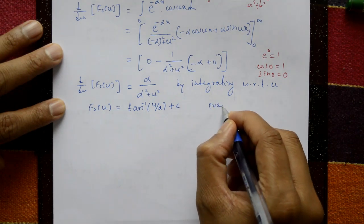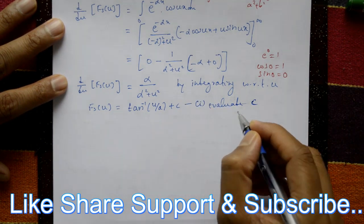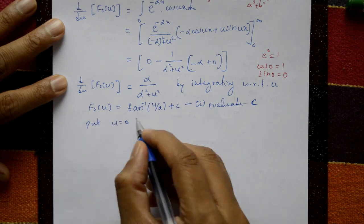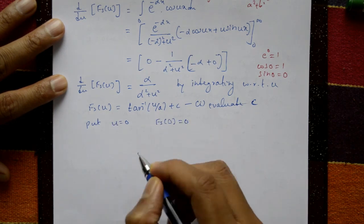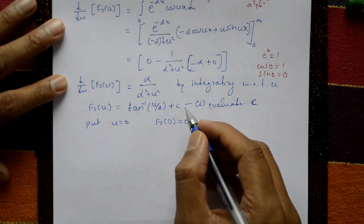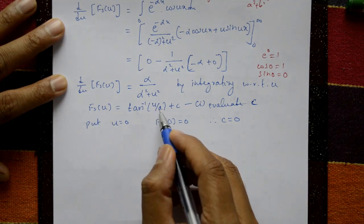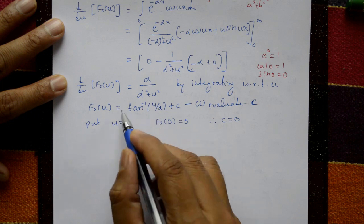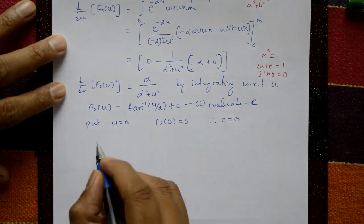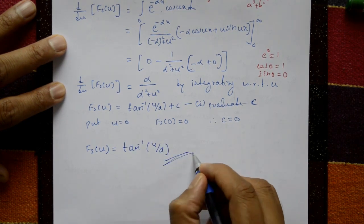Now we evaluate the constant c. Put u equals 0: Fs(0) equals 0, and tan(0) is also 0, so c equals 0. Substituting c equals 0 back into equation 1, we get the required solution: Fs(u) equals tan inverse of u over alpha.